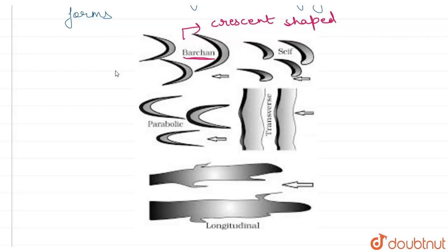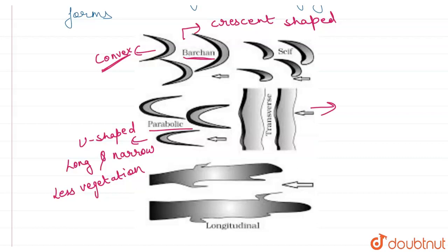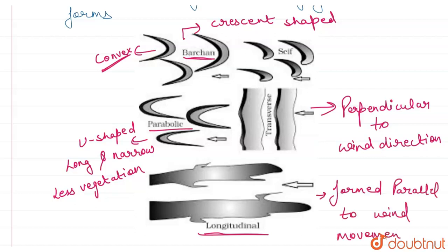There are parabolic sand dunes, which are U-shaped. There are transverse sand dunes, which are perpendicular to wind direction. And there are longitudinal sand dunes, which are parallel to the wind movement.